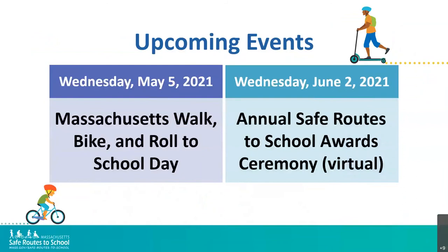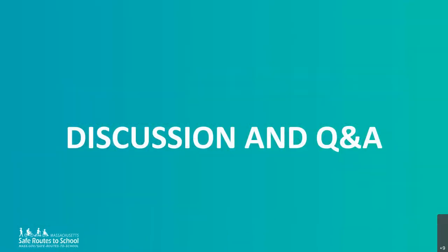Massachusetts Walk, Bike, and Roll to School Day is coming up on May 5th. Your school can also celebrate on any day in May that works best for you. Make sure to register your school ahead of time and request incentive items, including bookmarks in English and Spanish, and stickers with different designs. Registration information can be found on the main page of our website under events. Our annual award ceremony is coming up on June 2nd — save the date and plan for a start time of around 10 a.m. Please keep a lookout for your invite and be sure to register.